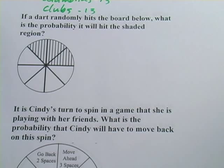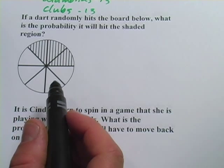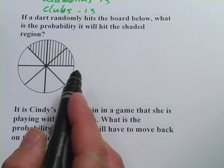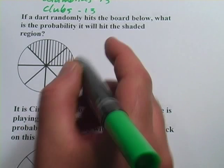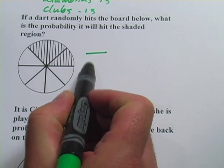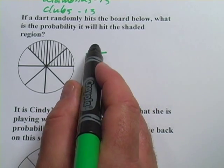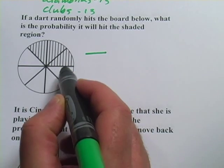Let's look at another one. This one says, if a dart randomly hits the board below, what is the probability it will hit the shaded area? When we calculate a probability, again, we want to make a fraction with the total things that could happen on the bottom and the things we're interested in happening on the top. So let me count the total sections here.